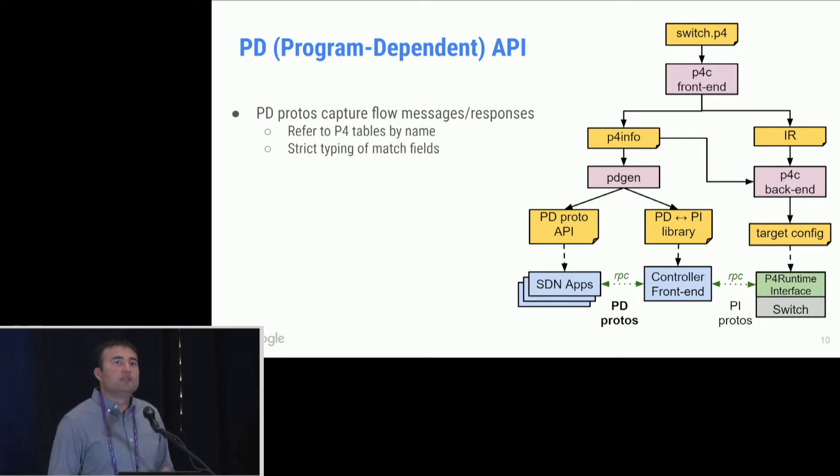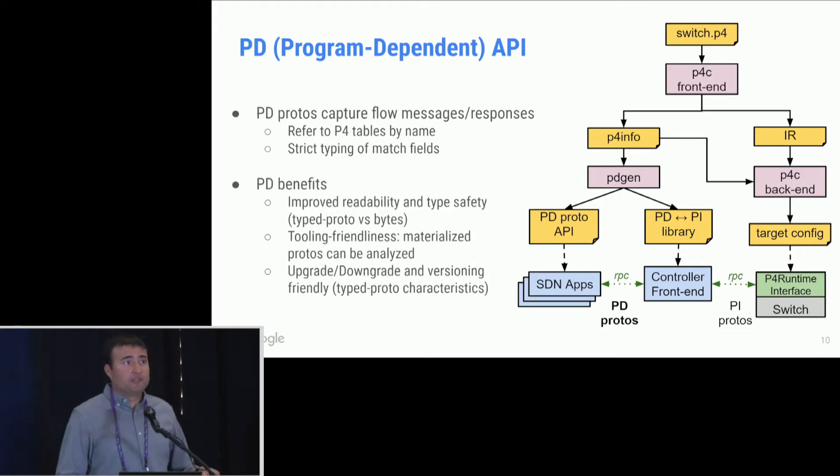The difference between PI and PD, some of the important differences are, first, in the PD world we refer to the P4 tables by name as opposed to IDs, so the schema of course changes. We also have very strict typing of match fields. So earlier what you saw in the PI materialized protos had bytes being used to refer to different values, now we'll have strict types associated with them. What are the PD benefits? First, it gives you better readability on the app side, and also gives you type safety. It gives you tooling friendliness, because when you analyze the logs of these RPC messages, you can actually see which tables were being written to and you can analyze those logs better. And finally, Bakar earlier highlighted the problem with versioning.